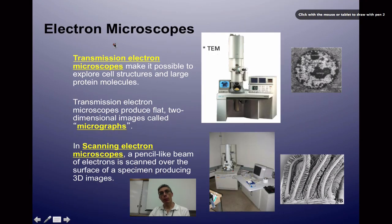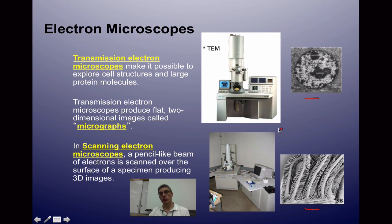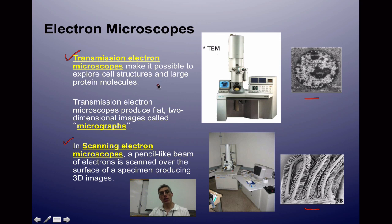Now let's compare the light microscope to electron microscopes. On the right-hand side you can see two images created using electron microscopes. The maximum magnification of a light microscope is about 1,000 times, whereas an electron microscope can achieve magnification in the millions — giving significantly more detail. There are two types: the TEM, or transmission electron microscope, and the SEM, or scanning electron microscope. Both use electrons to produce an image, which is typically viewed on a computer screen.